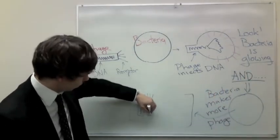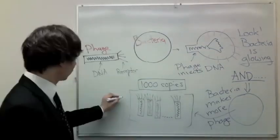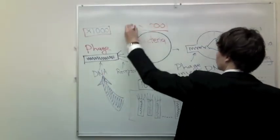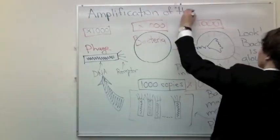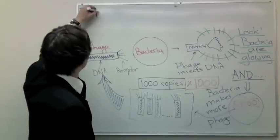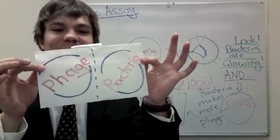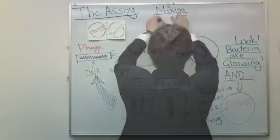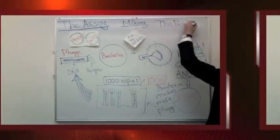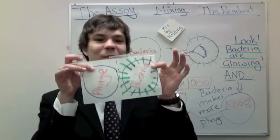Phages can make bacteria glow; they can also amplify at amazing rates and detect very weak signals. Folding a strip of paper with phage and bacteria starts amplification, and it can produce a glowing spot in less than a few hours.